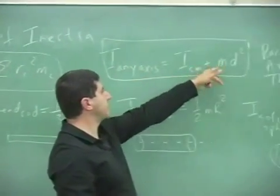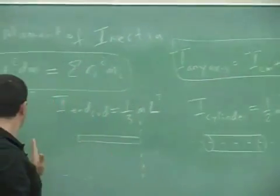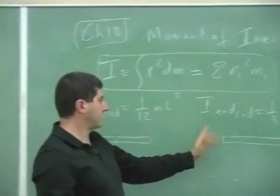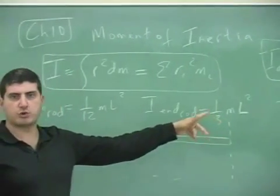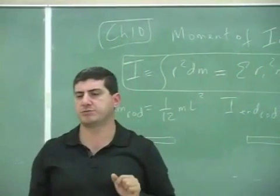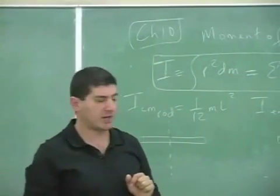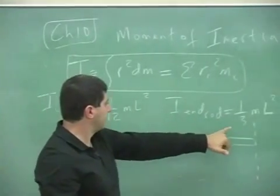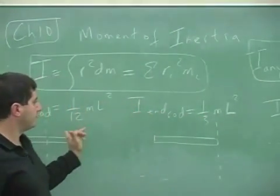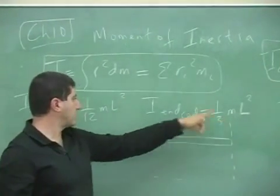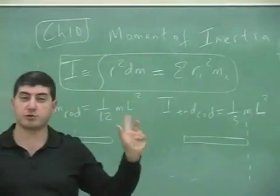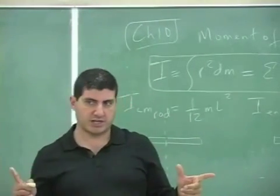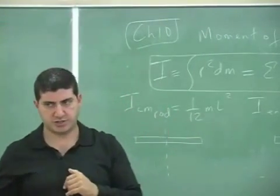The parallel axis theorem states that I about any axis is I center of mass plus md squared. I used it to shift from the center of mass to the end, and I showed that you can also get that result. We saw how the parallel axis theorem is really helpful for that. Taking the ratio of these two, it is four times bigger — so it was four times harder to rotate a uniform rod about its end than about its center.